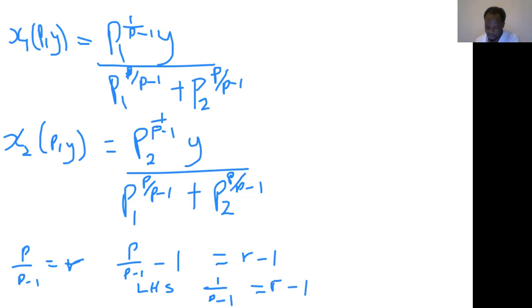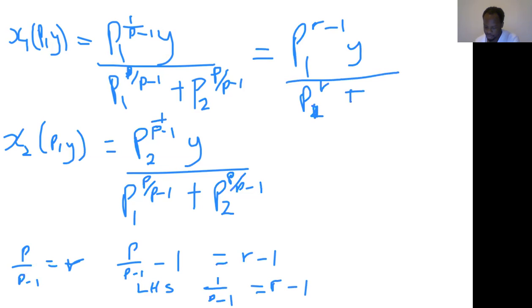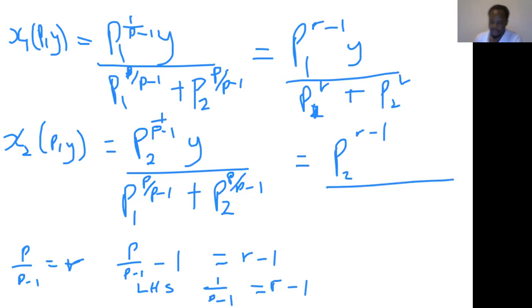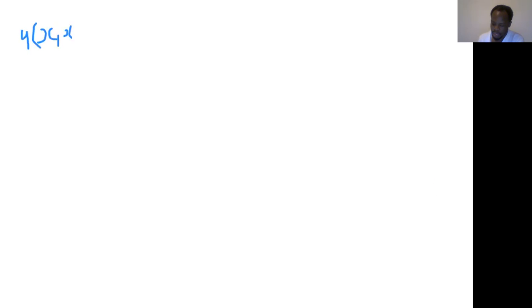So x1 simplifies to P1^(R-1) · y / (P1^R + P2^R), and x2 simplifies to P2^(R-1) · y / (P1^R + P2^R). We have now simplified the Marshallian demand functions for x1 and x2. Let's go and replace these in our utility function U(x1, x2) = (x1^φ + x2^φ)^(1/φ).